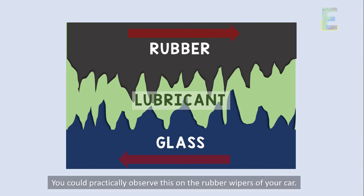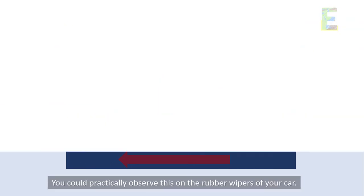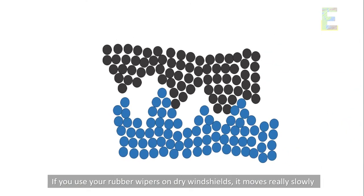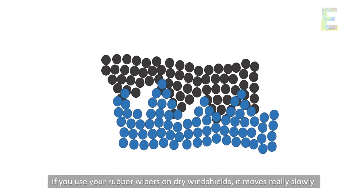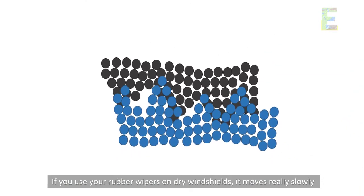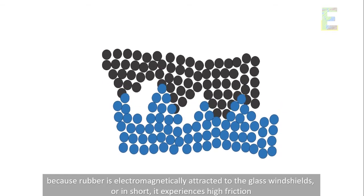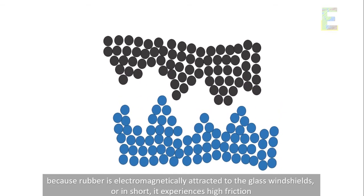You could practically observe this on the rubber wipers of your car. If you use your rubber wipers on dry windshields, they move really slowly because rubber is electromagnetically attracted to the glass windshields — in short, it experiences high friction.